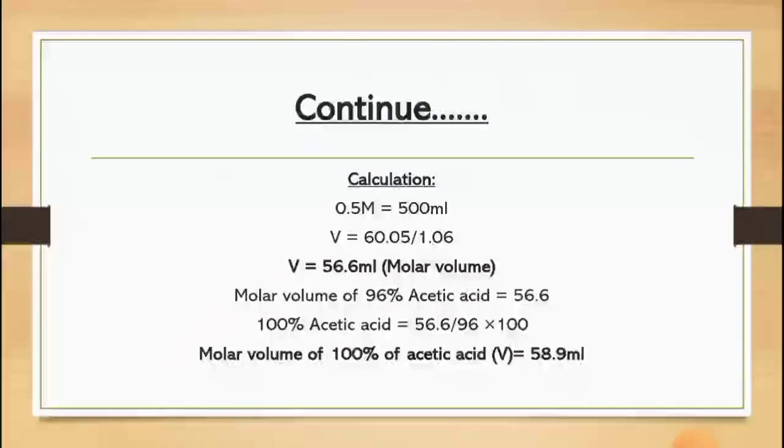Here the molar volume of 96% of acetic acid is 56.6 divided by 96. So we have to calculate now 100% of the acetic acid molar volume. We will multiply it by 100, that results in 58.9 ml. By the statement we have known that here is the 0.5 molar of acetic acid, so we will multiply the answer by 0.5 and it will result in 29.45 ml of the molar volume.